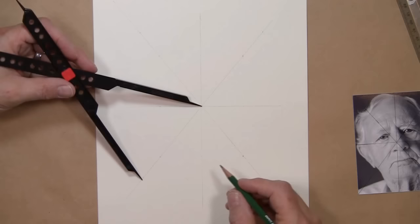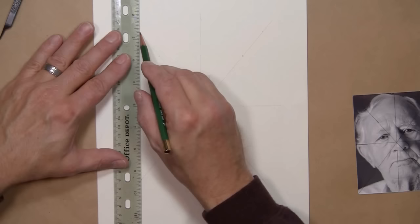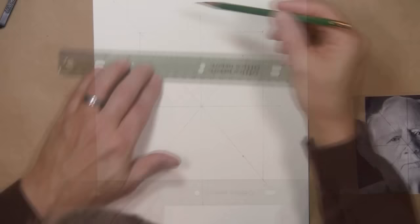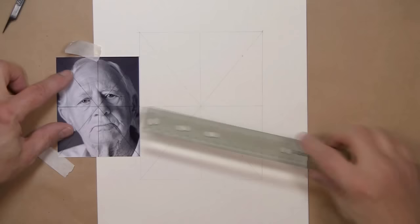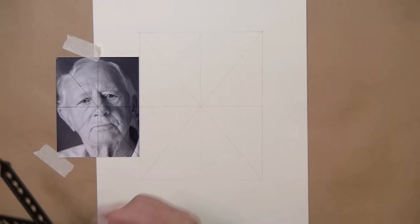Next, just take your ruler and connect the dots. If you want to, you can erase any place where the diagonal lines were too long. You could have also measured how long you want to make those diagonal lines and you wouldn't have to be erasing here. Now I want to line up the photograph right next to where I'm going to draw it here. Now I can start taking the measurements.